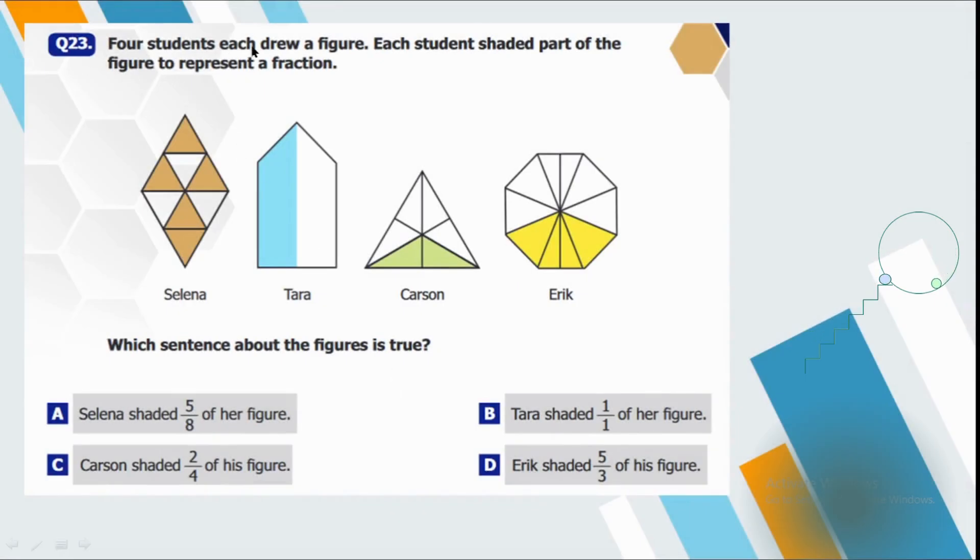Question number 23. Four students each drew a figure. Each student shaded part of the figure to represent a fraction. Which sentence about the figure is true? So you can see that there are total eight parts out of which five are colored. So Selena shaded five by eight of her figure. That's quite true. Tara, there are two parts but one is colored. So Tara shaded one by one of her figure which is wrong. Carson shaded two by four of his figure which is wrong because there are six parts in Carson figure and two are colored. So it should be two by six. And similarly, Eric shaded five by three of his figure. It's obviously wrong because it's not an improper fraction. It's a simple proper fraction. So that's why we will choose A as our answer.